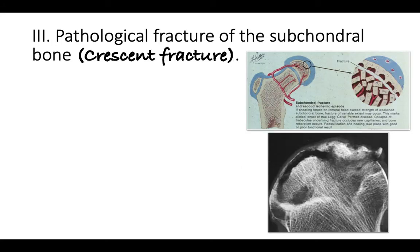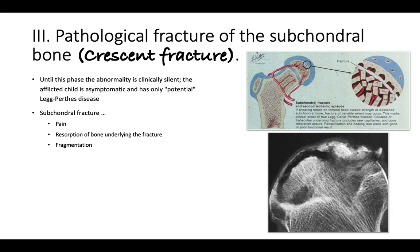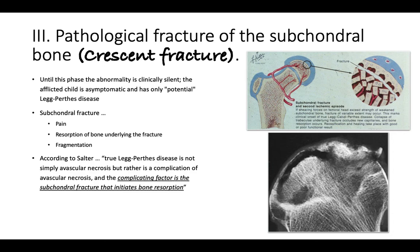Stage three is a pathologic fracture in the subchondral area — the crescent fracture — caused by structural weakness from increased bone resorption in the subchondral area. This crescent fracture is actually the cause of symptoms of early Perthes disease. Until this phase, the abnormality is clinically silent — called potential Legg-Calvé-Perthes disease. But once the subchondral fracture takes place, there will be pain, resorption of bone underlying the fracture begins, causing femoral head fragmentation. According to Salter, true Legg-Calvé-Perthes disease is not simply avascular necrosis, but rather a complication initiated by the subchondral fracture.